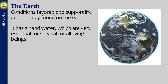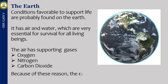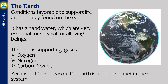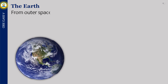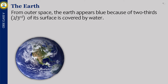The air has supporting gases — oxygen, nitrogen, and carbon dioxide. Because of this reason, the Earth is a unique planet in the solar system. From outer space, the Earth appears blue because two-thirds of its surface is covered by water. Therefore it is also called the blue planet.